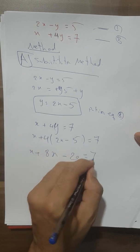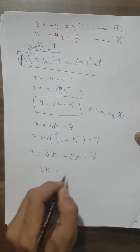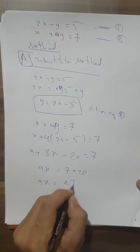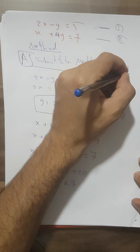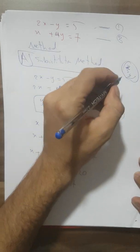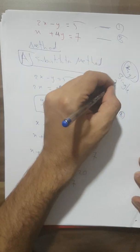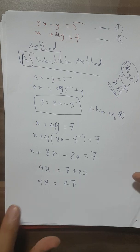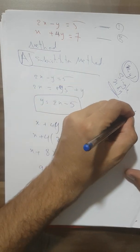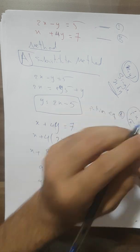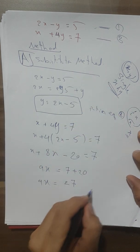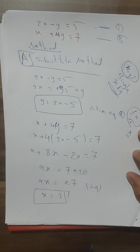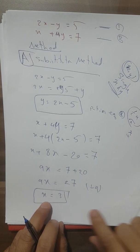Expanding gives us 8x minus 20 equals 7, so 9x equals 27. When we say 'solve,' we mean find a single value for x and y — just a plain number. Dividing both sides by 9, we get x equals 3.